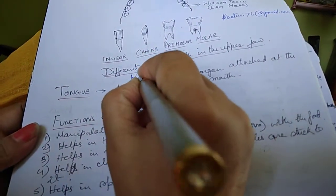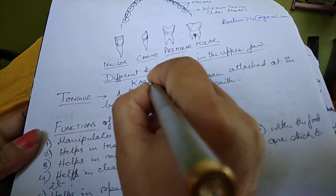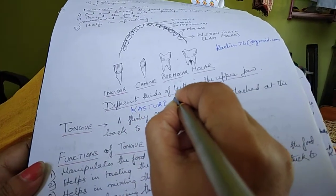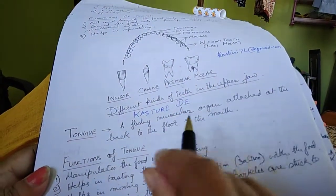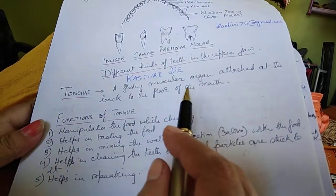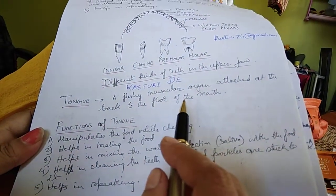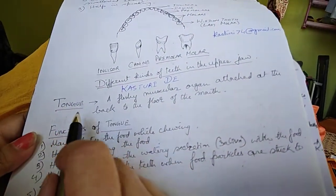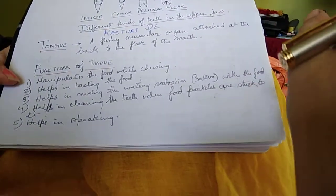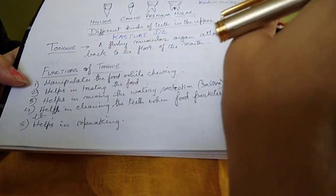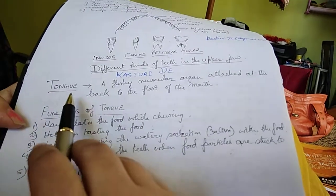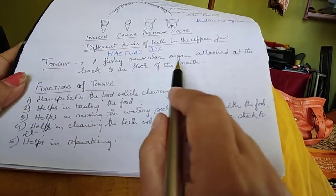This is Kasturi speaking on the tongue. It's a continuation of the chapter on the digestive system according to the ICSE syllabus, Class 6. I last stopped with the teeth, and now I continue with the tongue. It's a fleshy muscular organ attached at the back of the floor of the mouth.